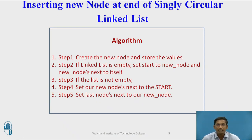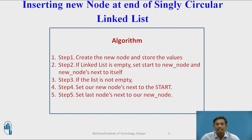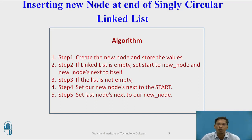We will see an algorithm for inserting a new node at the end of a singly circular linked list. Step 1: create the new node and store the values. Whenever you want to insert a new node inside any linked list, the first task is to allocate memory for the new node and store the value entered by the user in the data part of that new node.